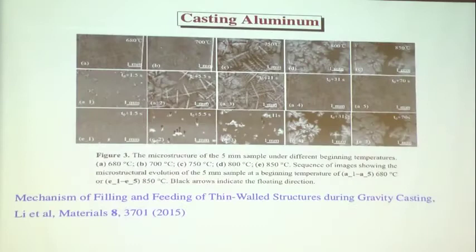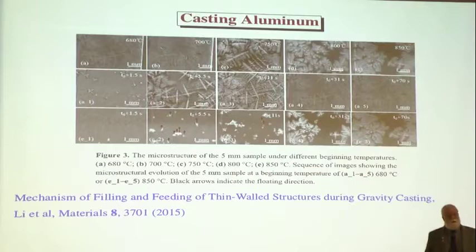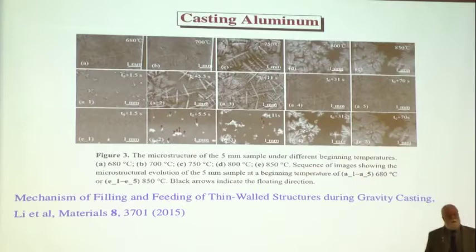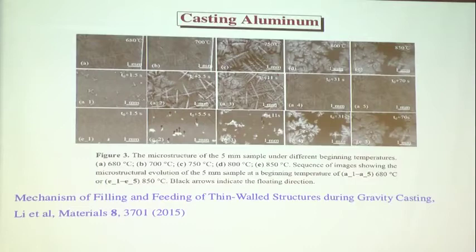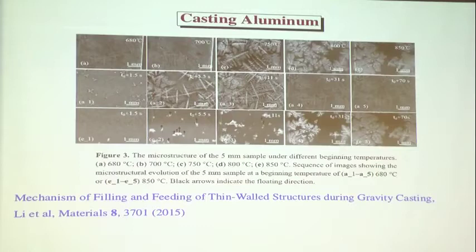The type of thing I'm interested in is how the structure of materials changes in time and how it controls the functional properties — the physics of non-equilibrium materials. I've never actually studied aluminum, but it's a nice example of the kind of problems material science has been attacking over the last 50 years. The paper is titled 'Filling and feeding of thin-walled structures during gravity casting' — think beer cans. Beer cans are actually very highly technical, sophisticated devices.